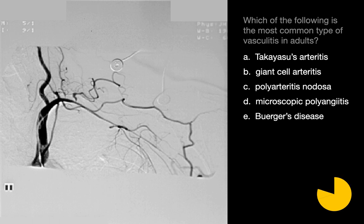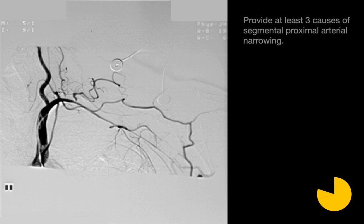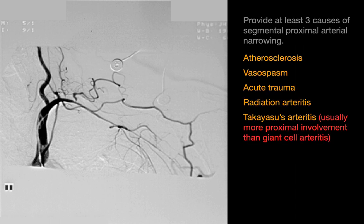The most common type of vasculitis in adults is giant cell arteritis, which is the diagnosis in this particular case. Causes of segmental proximal arterial narrowing may include atherosclerosis, vasospasm, acute trauma, radiation arteritis, and Takayasu's, which usually has a slightly more proximal involvement than seen with giant cell arteritis.